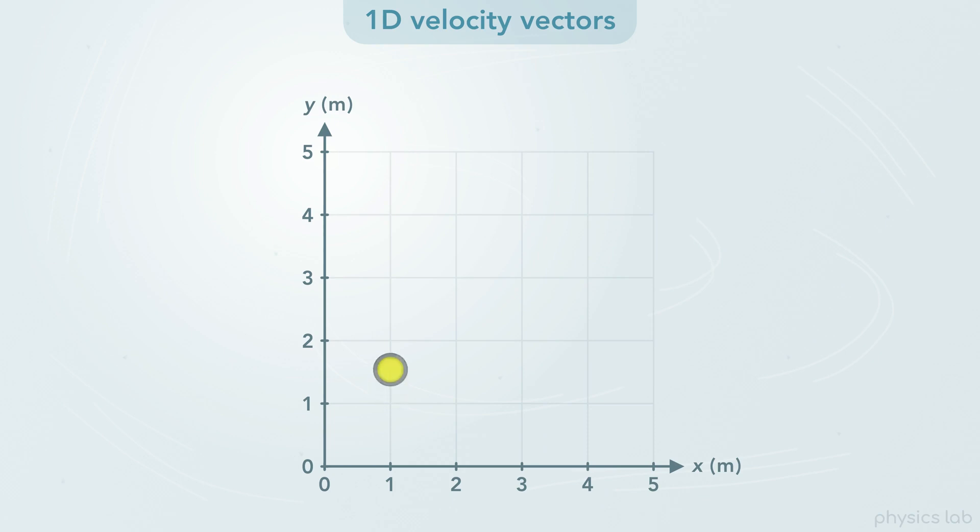If the stone was moving in the y direction, at 2 meters per second, then the velocity vector would look like this, and it would be the same at every point in time.